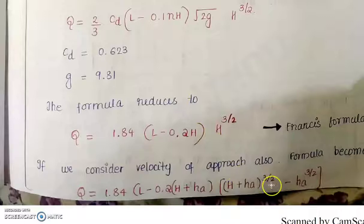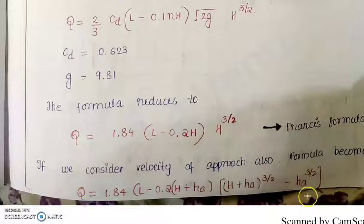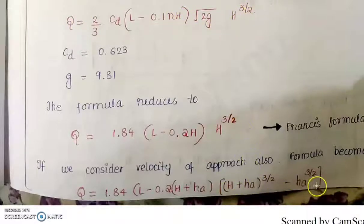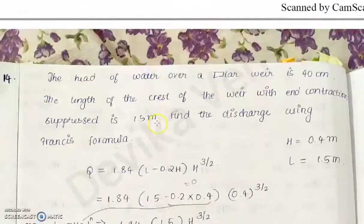The integrated form gives (H + H_A)^(3/2) − H_A^(3/2). This is the complete Francis formula considering both end contraction and velocity of approach. In the equation, wherever H appears alone, it becomes H + H_A, and the H^(3/2) term becomes [(H + H_A)^(3/2) − H_A^(3/2)] in brackets.